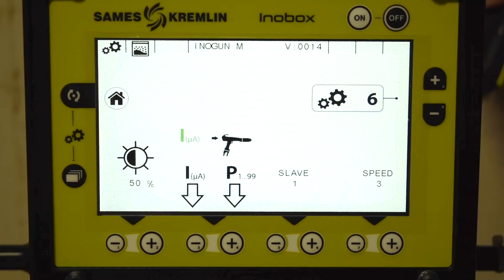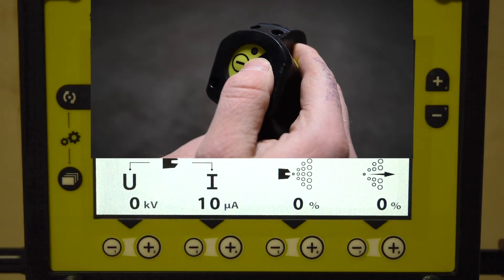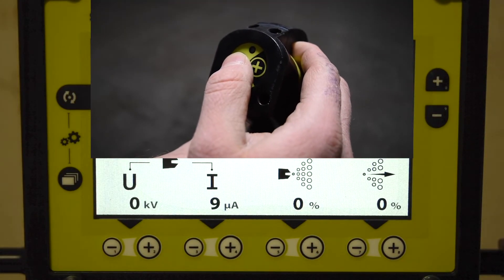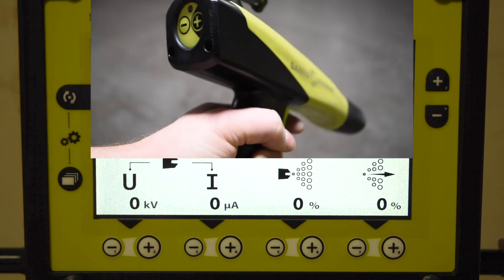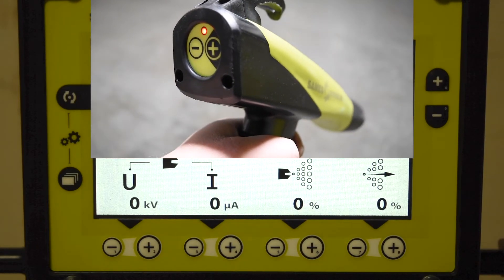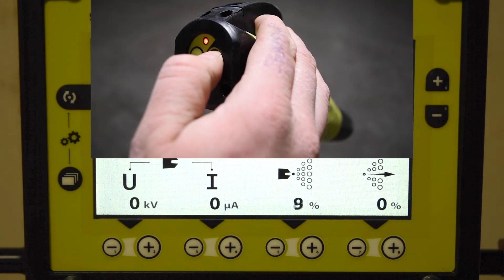On this screen, you can adjust brightness and remote settings from your spray gun. With the trigger released, you can adjust your amperage. With the trigger held, you can adjust injection. You can change these settings in the remote settings screen.